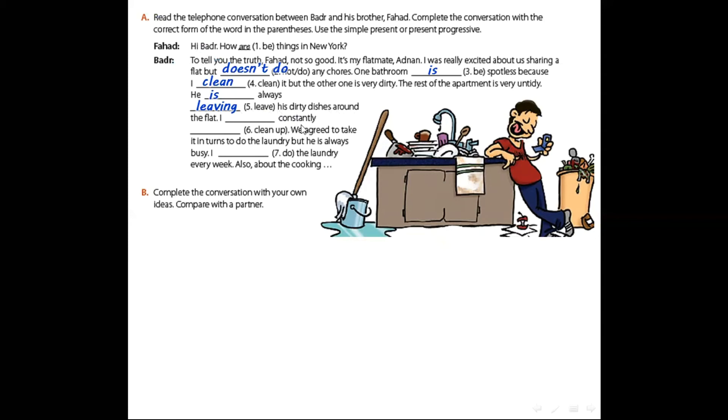I constantly, constantly. Excellent. Also present progressive. I plus am. Excellent. And we add ing to the verb to be cleaning up. We agreed to take it in turn to do the laundry but he is always busy. I do the laundry every week. Every week. It's a habit. So I use do. Excellent. Also about the cooking.